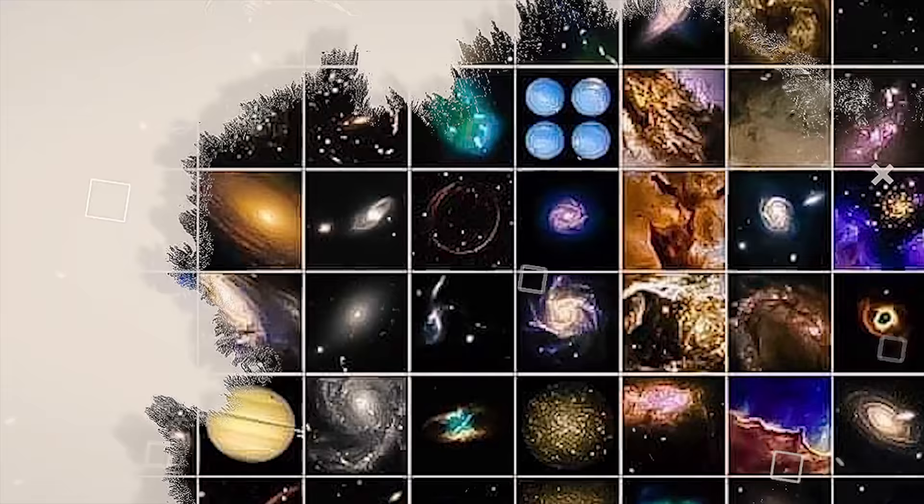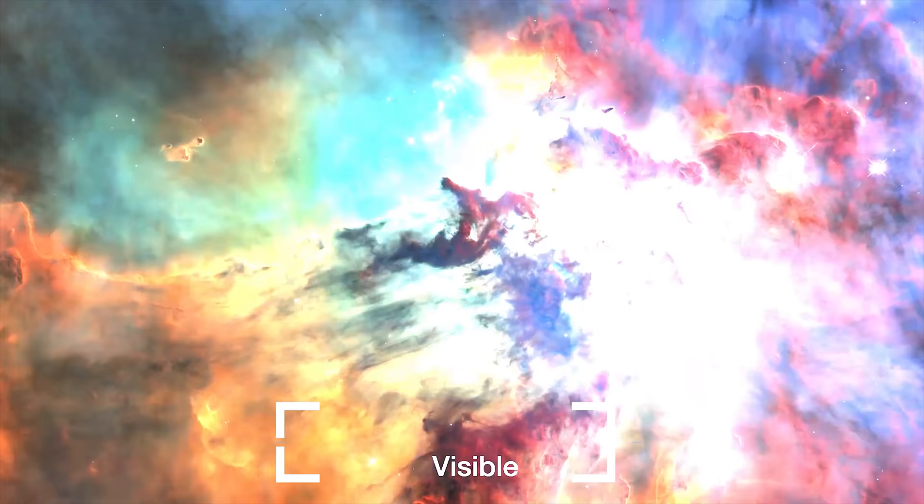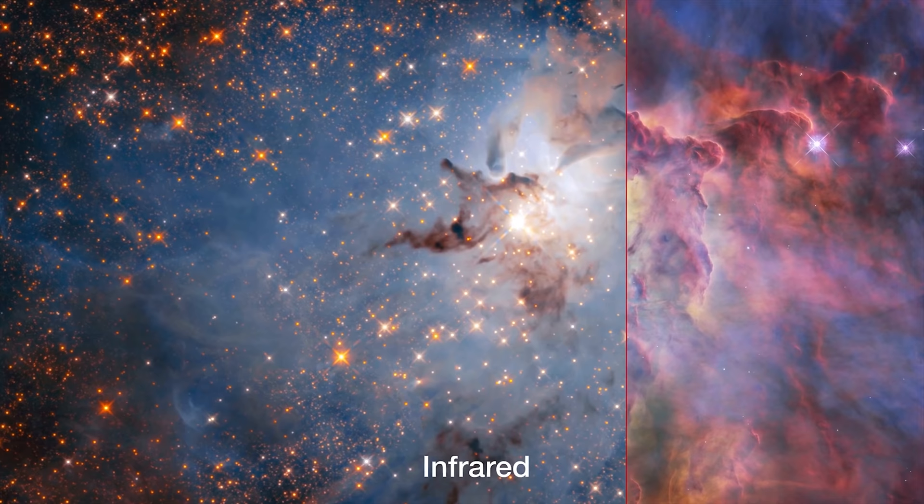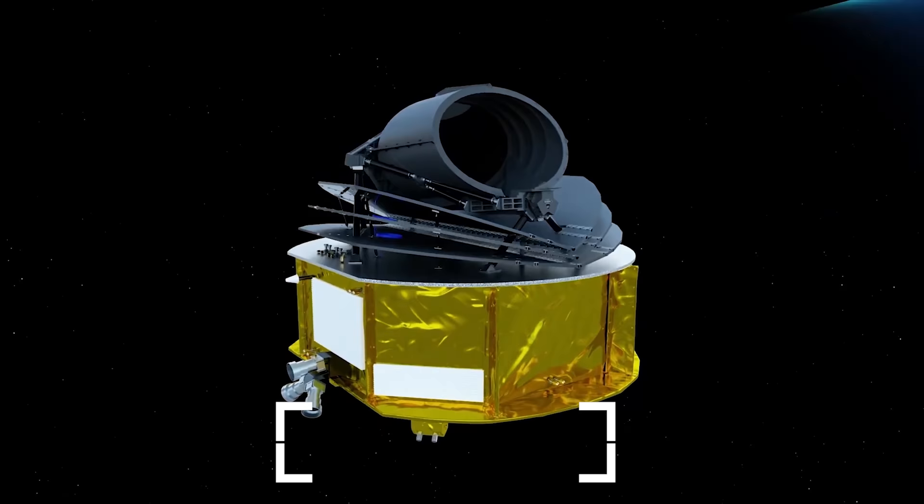In this sense, NASA prefers to refer to JWST as the successor to Hubble rather than a replacement because it is specifically focused on the infrared part of the spectrum, which means it can see light emitted by stars and galaxies that existed over 13 billion years ago, making this telescope, in essence, a time machine.